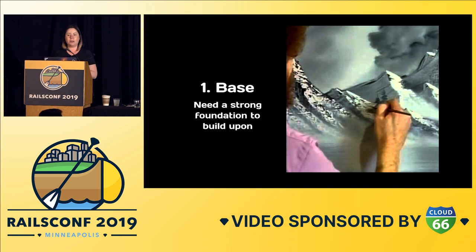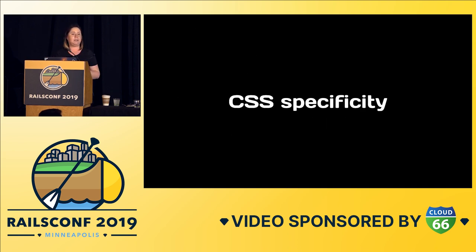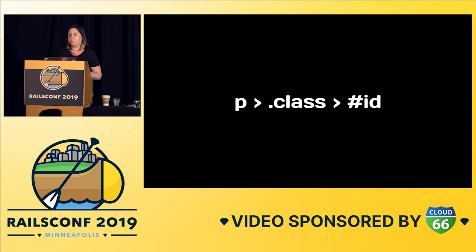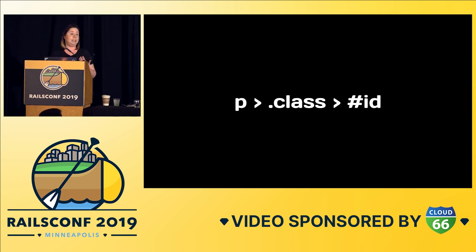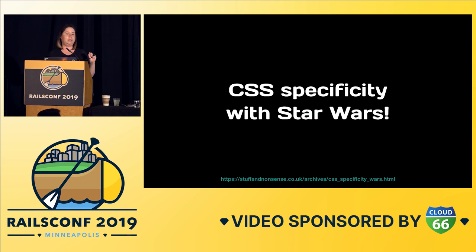Pain point number one that I typically see people struggle with is targeting a specific element. This gets into something called CSS specificity. Most people are familiar with the basic principles: you have an element like a P tag, a class supersedes that, and an ID supersedes that. But what happens when you start adding more things into the mix? Things can get dicey. This is where learning CSS specificity with Star Wars really helped me understand how to better target different elements.